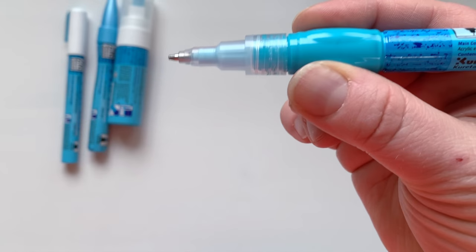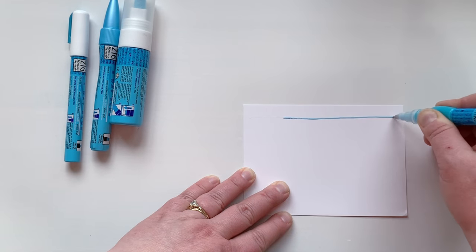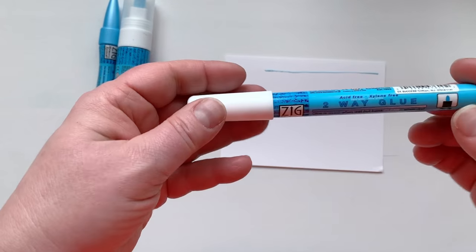Now let's take a look at the four different tips. First up we have the squeeze and roll tip. This one is like a ballpoint pen and you need to squeeze it in order to get the glue to flow.